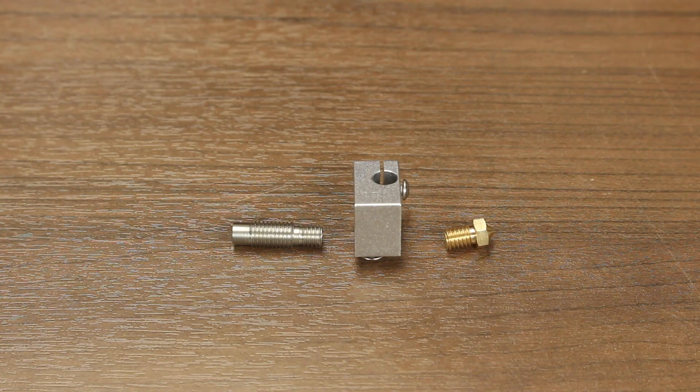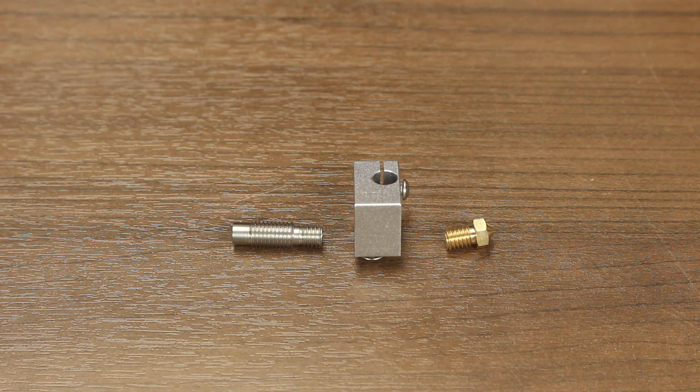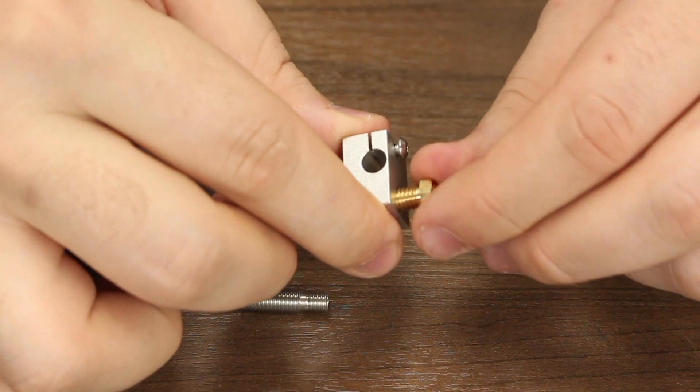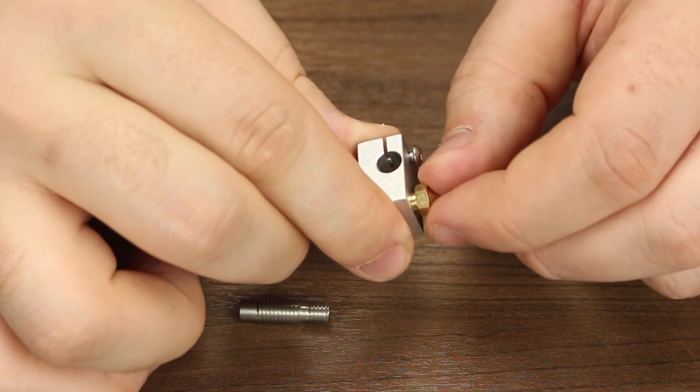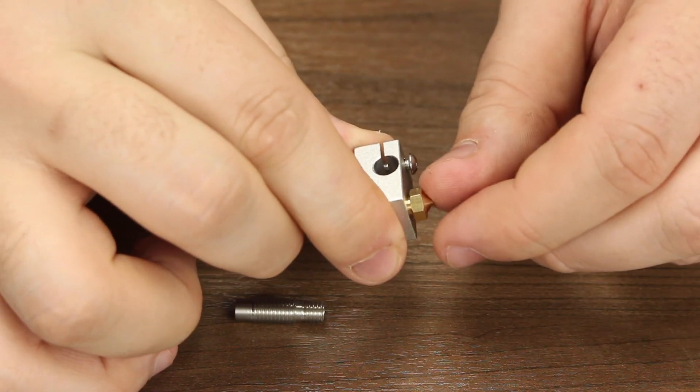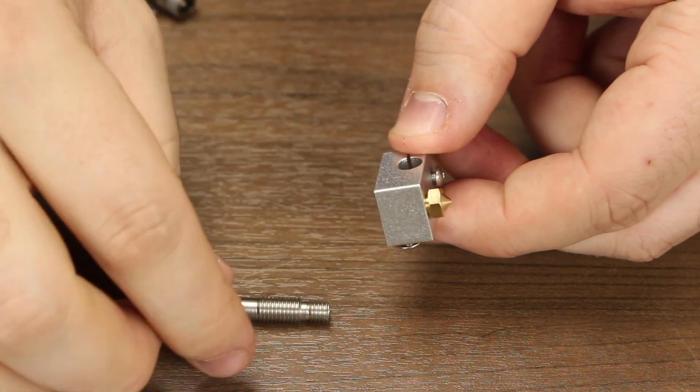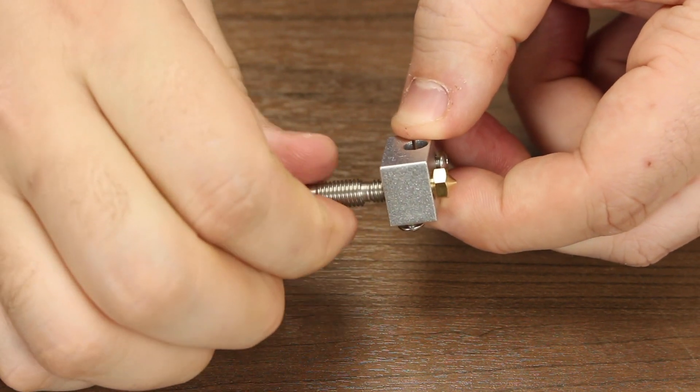Now let's take a look at the PTFE version of the E3D V6 hot end assembly. The assembly procedure will mirror the one that we just did on our all metal version. Screw the nozzle in until you have about a half millimeter space between the bottom of the block and the top of the nozzle, and then screw your heat break in.